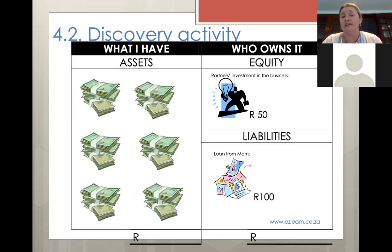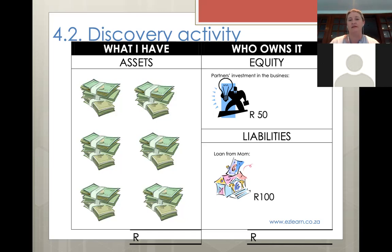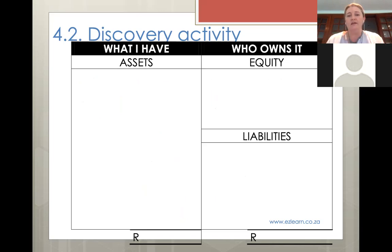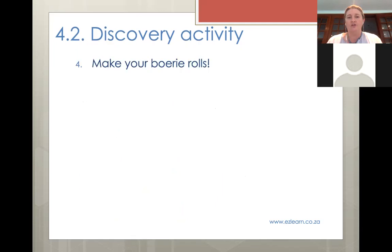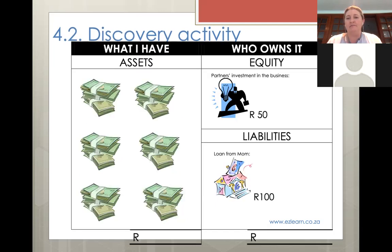Then we're going to sell the boerewors rolls. We head off to the hungry neighbors - luckily there's an important rugby match on and it's nearly lunch time. You sell all 20 rolls that you and your friends have made at 15 rand each. You need to show this in your table and check that it balances. Do you see that you're suddenly going to get all that money coming in? We previously had our boerewors rolls, and now we've suddenly got our money.